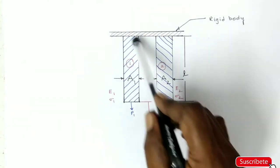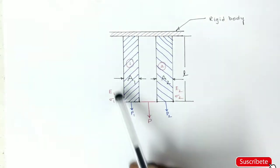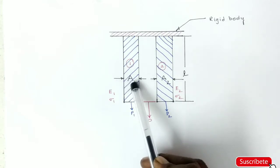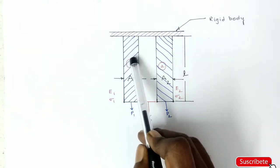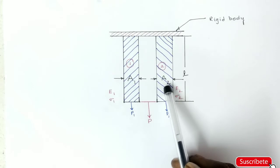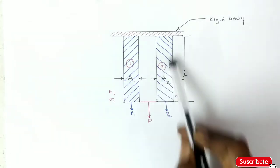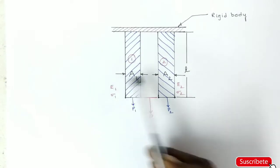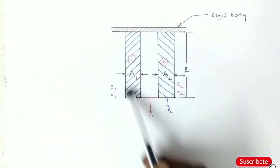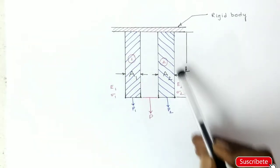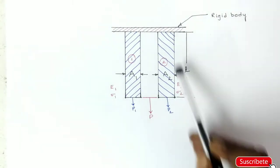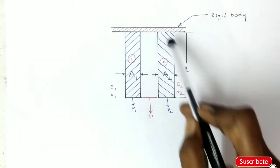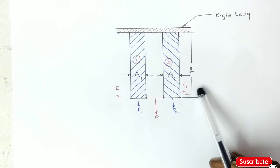So material 1, E1 is the Young's modulus, A1 is the cross section area. First material. A2 is the cross section material 2. E1 Young's modulus at material 1, E2 Young's modulus material 2.